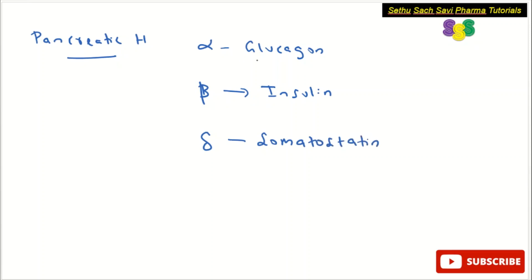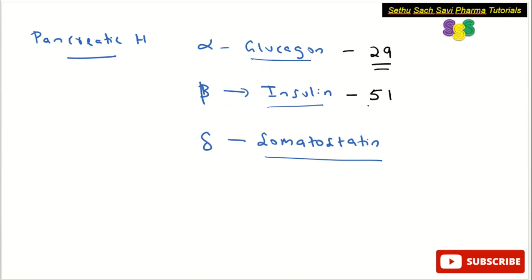Glucagon, insulin, and somatostatin are all peptides. Glucagon is made up of 29 amino acids, insulin is made up of 51 amino acids, and somatostatin is made up of 14 amino acids. Somatostatin is also called growth hormone inhibiting hormone.